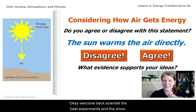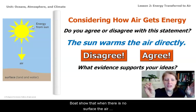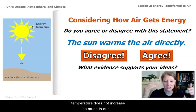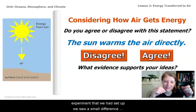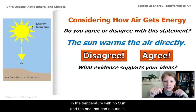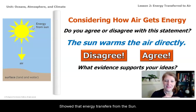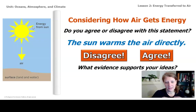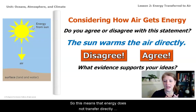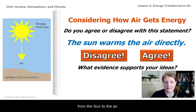Welcome back, scientists. The heating experiment and the sim both showed that when there is no surface, the air temperature does not increase as much. In our experiment, we saw a small difference in temperature between no surface and the one that had a surface. The sim showed that energy transfers from the sun to the surface first, and then from the surface to the air. This means that energy does not transfer directly from the sun to the air.